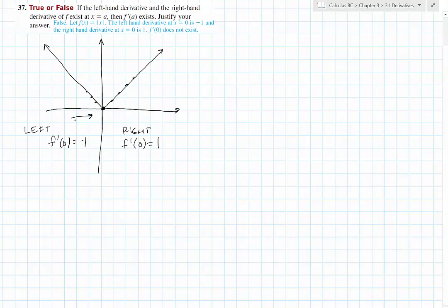Now, this left-hand derivative exists, this right-hand derivative exists, but they don't equal each other. And because left-hand derivative does not equal the right-hand derivative, our conclusion is that the derivative at 0 does not exist.